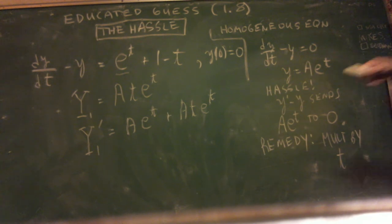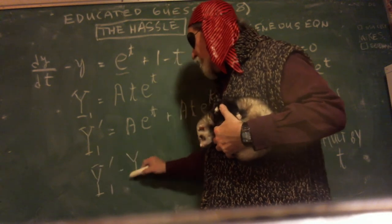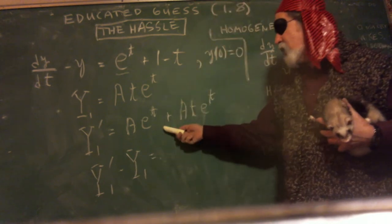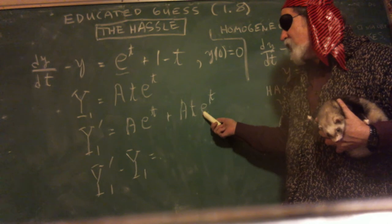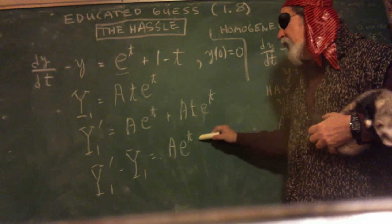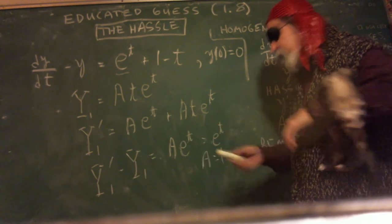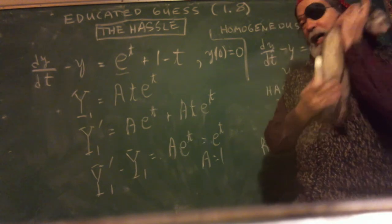But now, when I do y sub one prime minus y sub one, I'm doing this minus that. And you can see the a·t·e^t's cancel. And I'm left with a·e^t. I'm very happy with that. And that's supposed to be equal to e^t. So a equals one. That's big news. I now have part of my solution.